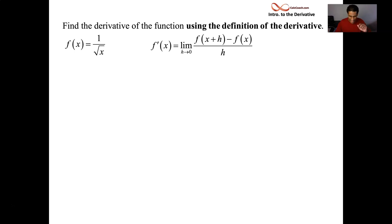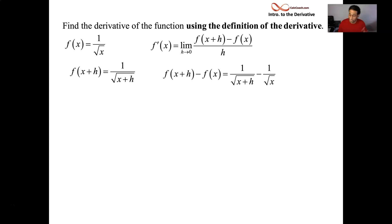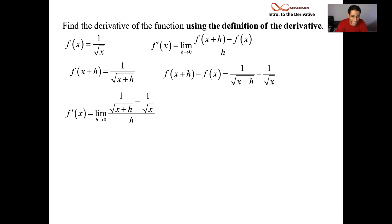So here we go. f of x plus h means 1 over the square root of x plus h. f of x is already there — take one, subtract the other, divide by h, and find the limit. Here's where the drama happens. What we need is to cancel that h from the denominator, so we need to take some action on this numerator. We need an h factor so we can get the h from the denominator to cancel with the h factor from the numerator.